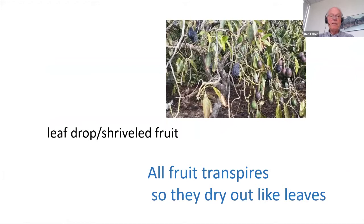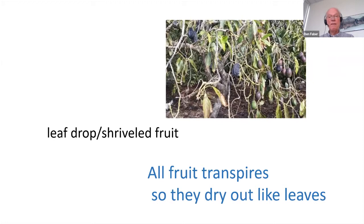Eventually you'll see leaf drop and shriveled fruit. This shriveled fruit is often Dothiorella-affected. The leaves start shriveling, you start getting dieback, and Dothiorella moves into the canopy feeding on the dead tissue of the leaves and dead tissue of the fruit. Here's an example of clear lack of water or salt damage leading to a disease — what we call Dothiorella leaf blight or fruit blight. These are problems that no phosphonate is going to affect — they're not caused by Phytophthora, they're caused by a fungus, the Botryosphaeria.